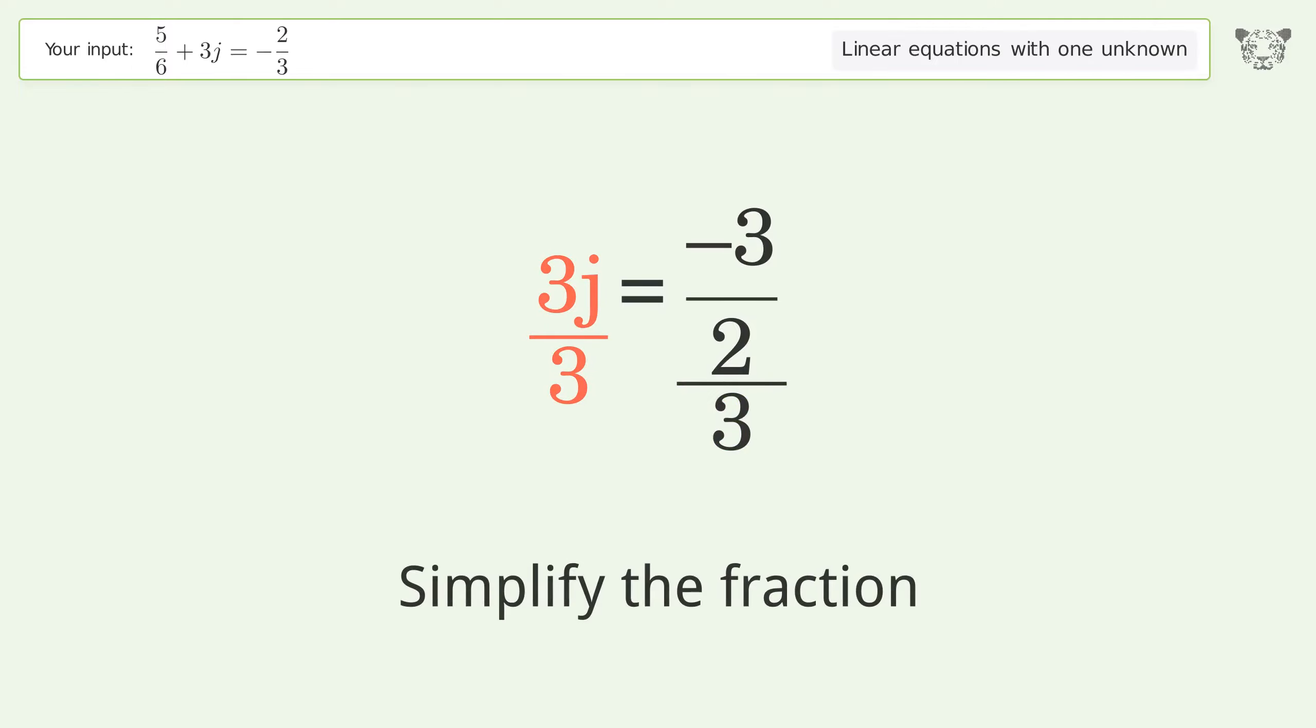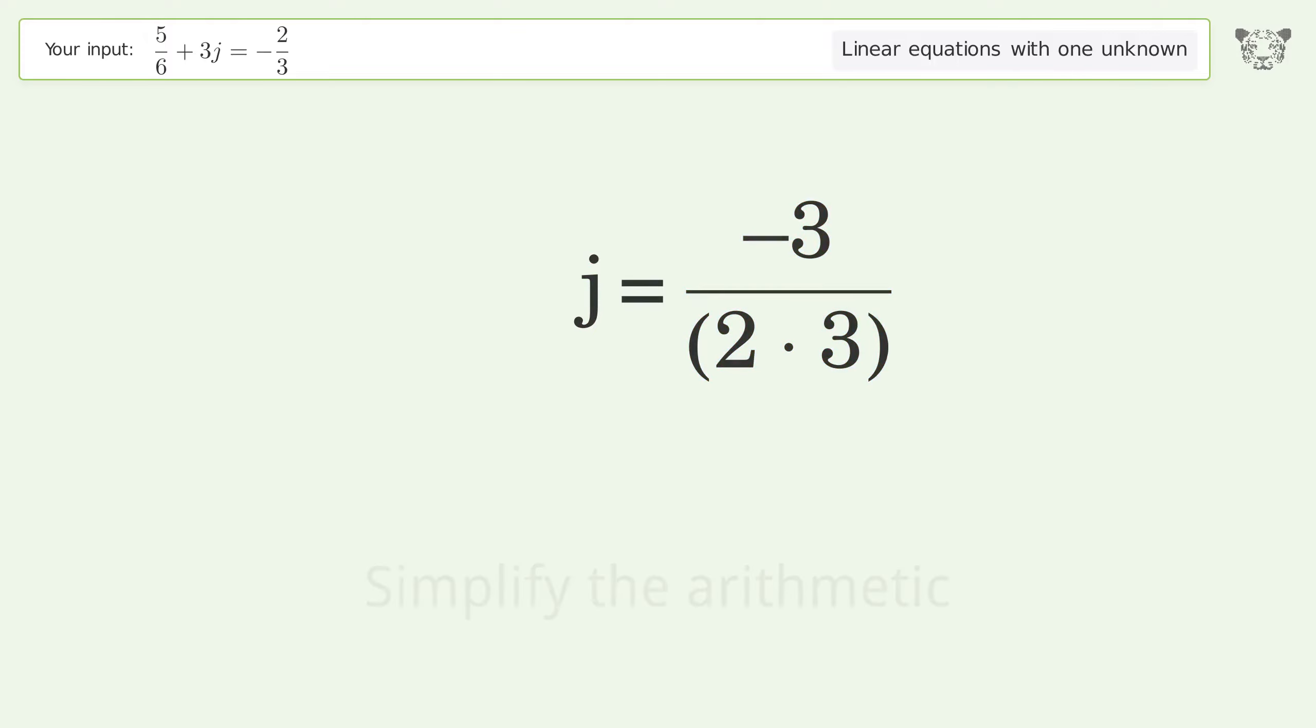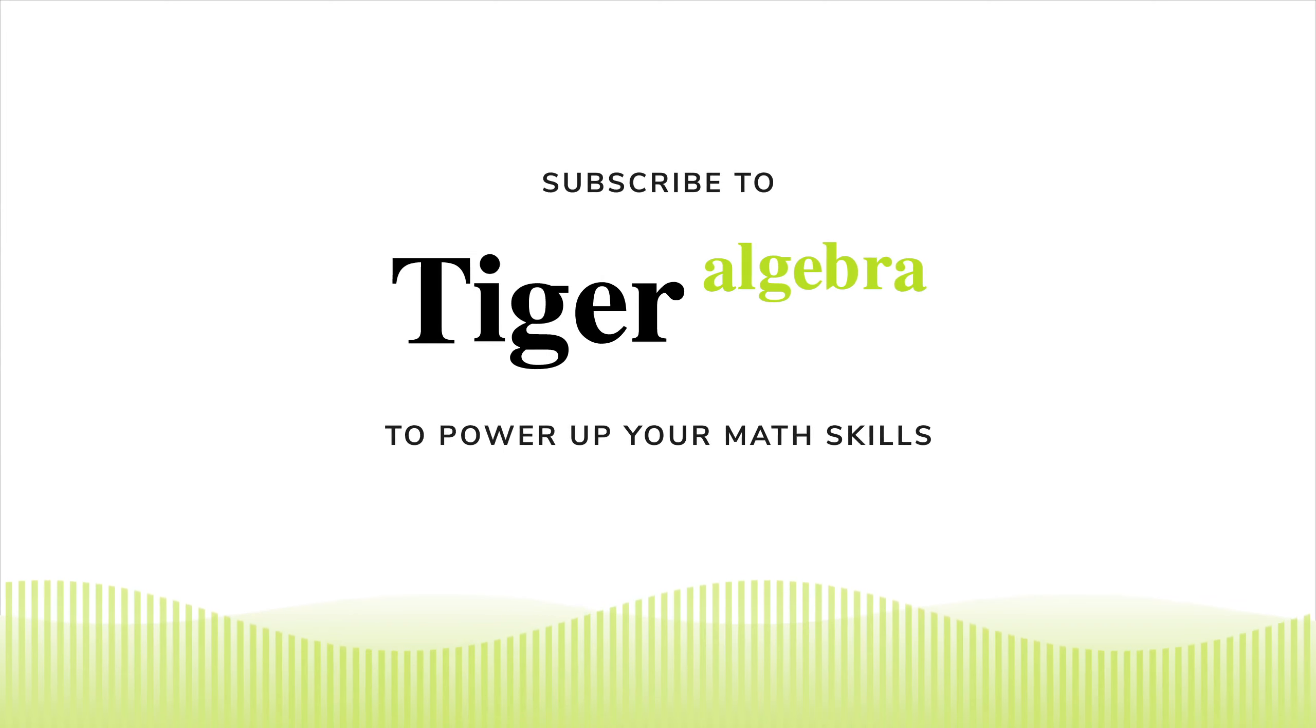Simplify the fraction. Simplify the arithmetic. And so the final result is j equals negative one over two.